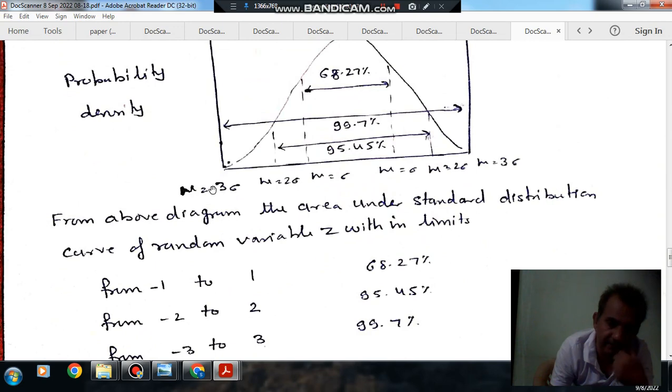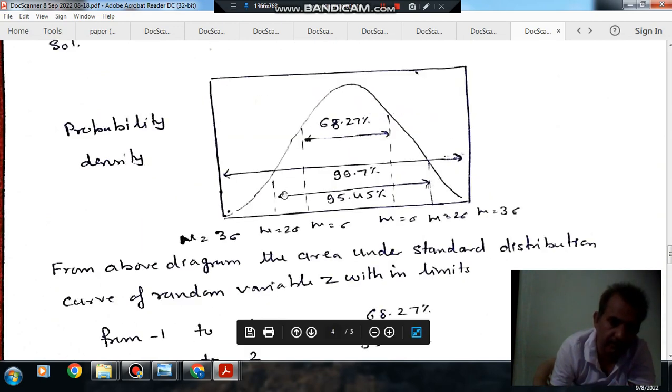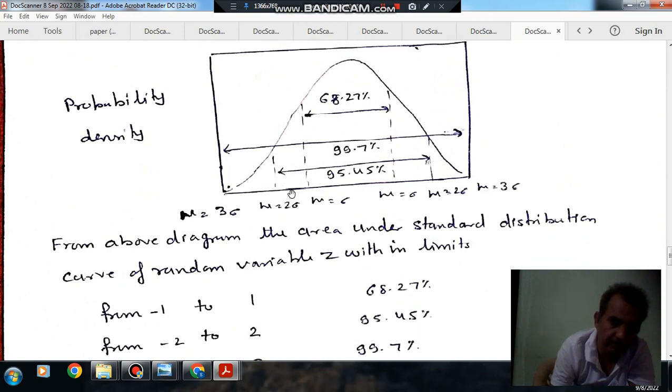When the random variable is between minus 3 and 3, the area is 99.7%. When it's between minus 2 and 2, the area is 95.45%.